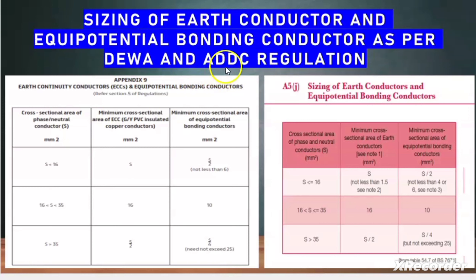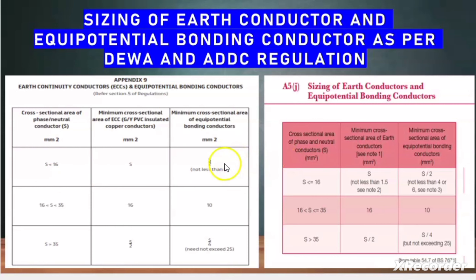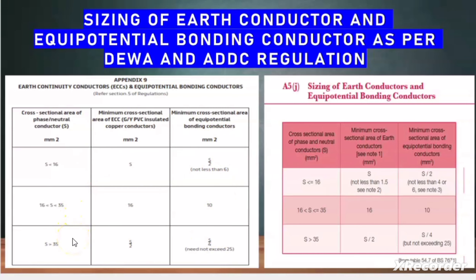In DIVA and ADDC regulation, the selection of ECC conductor — that is earth continuity conductor — and the equipotential bonding conductor, that is EBC conductor, has the same rule. Depending on the phase conductor, the equipotential conductor size and the ECC conductor size will be the same in DIVA regulation as well as in ADDC regulation. Here you can see one Appendix 9 which is given in the DIVA regulation, and there is one Table 54.7 which is also given in ADDC regulation. Let us start this video to know how to select the ECC conductor size and the equipotential conductor size depending on the phase conductor size.